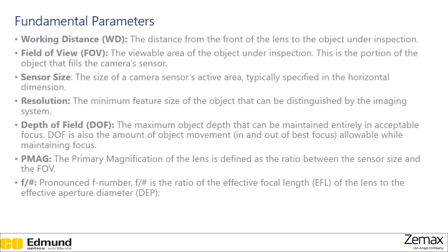So the 7 parameters we're going to be looking at are working distance, field of view, sensor size, resolution, depth of field, primary magnification, and f number. By the end of this section you should have a qualitative understanding of all of these parameters and some idea about how some of them will relate to each other.